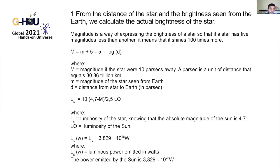We have several steps for doing the calculations. The first step uses the distance to the star and its apparent brightness as seen from Earth to calculate the actual brightness of the star. First we calculate the absolute magnitude, then the luminosity in comparison with the Sun, and then the real luminosity.